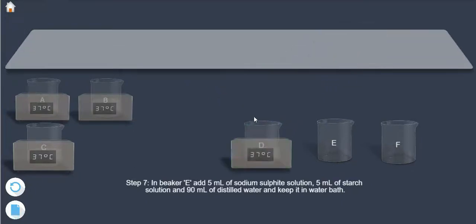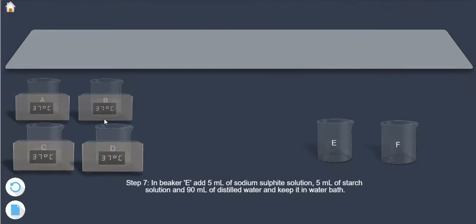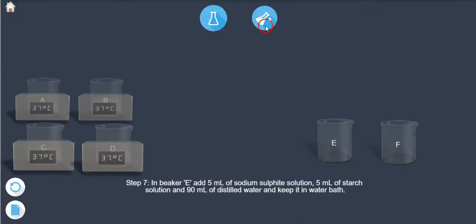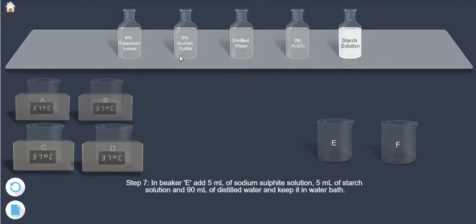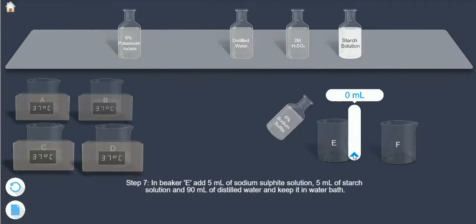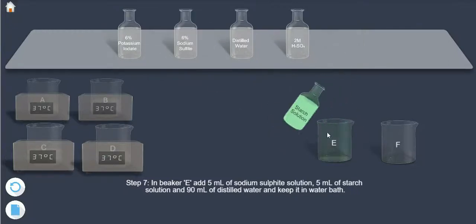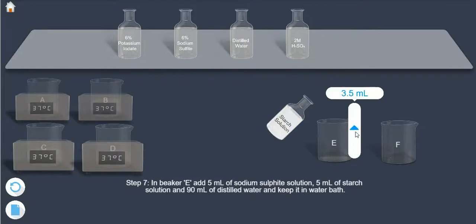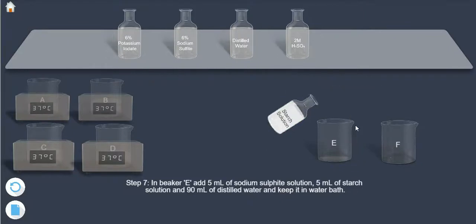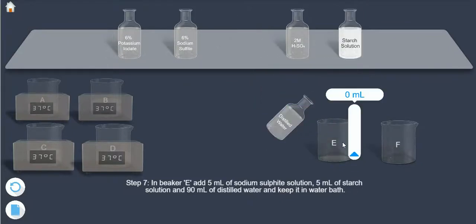Step 7: In beaker E, add 15 ml of sodium sulfate solution, 5 ml of starch solution, and 90 ml of distilled water, and keep it in the water bath.